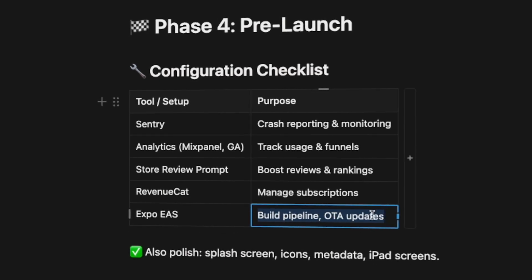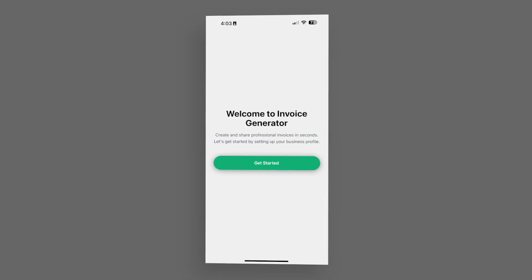I'm also setting up RevenueCat with all the in-app subscriptions, setting up the build pipeline, and over-the-air updates using Expo. I work on the icon, the splash screen, the onboarding screens, and all the metadata — basically polishing everything to make the app ready to submit to the store. I have an internal checklist to make sure all applications follow the best practices we've developed, and with our template a lot of these things are already set up.